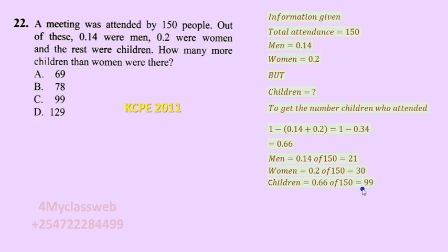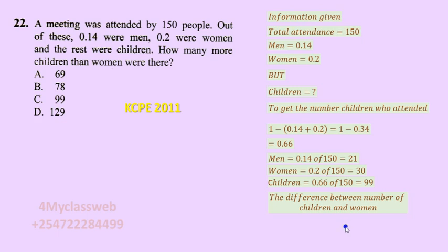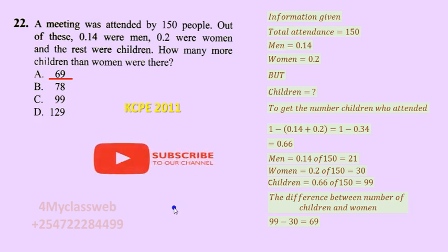We find that 99 is greater than 30, meaning more children attended than women. To answer the question — how many more children than women were there — we get the difference: 99 minus 30 equals 69. So 69 was the difference between the number of children and women, which is choice A. Please continue subscribing to this channel for more worked examples. Thank you very much.